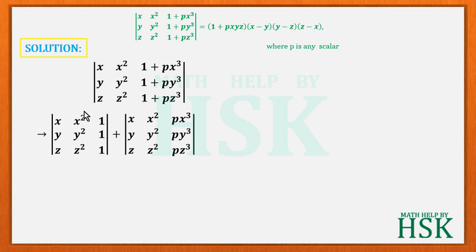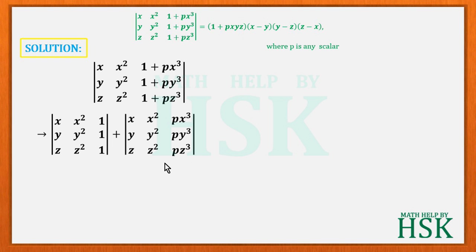In the first determinant, the first elements of column 3 are kept; in the second determinant, the second elements are kept. These two separate determinants can be added to give the original determinant.